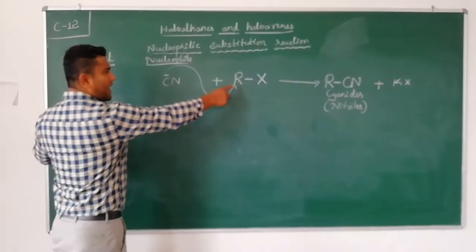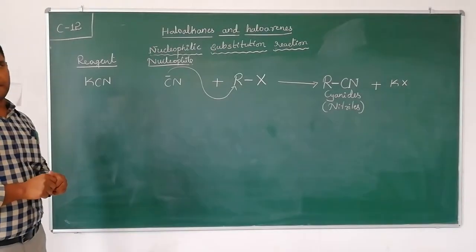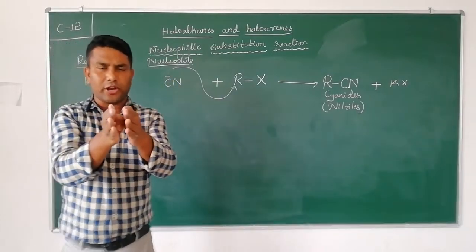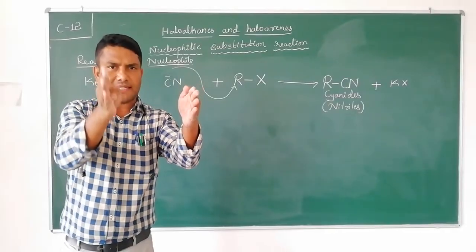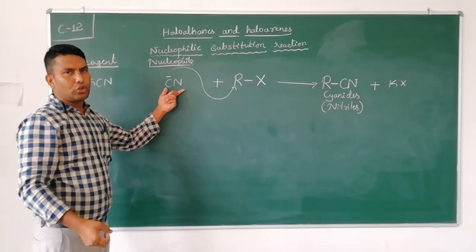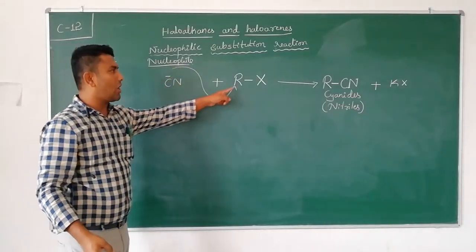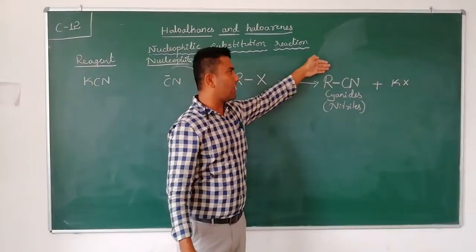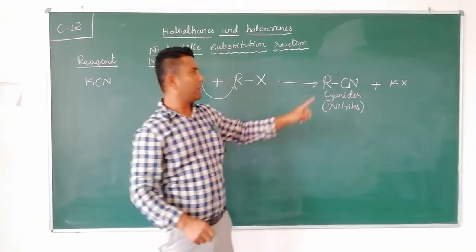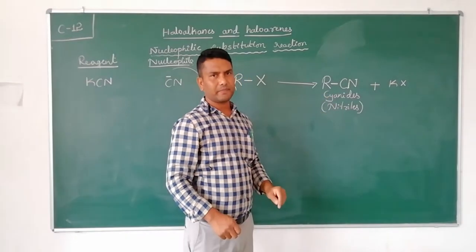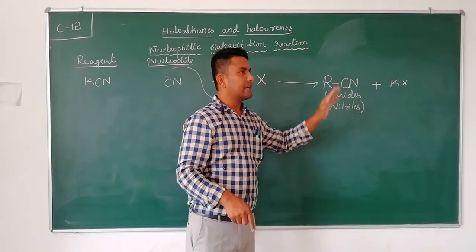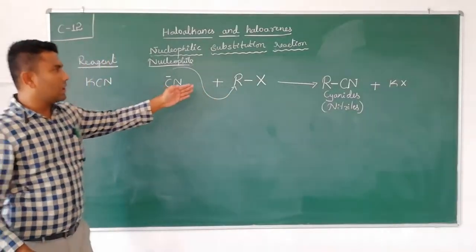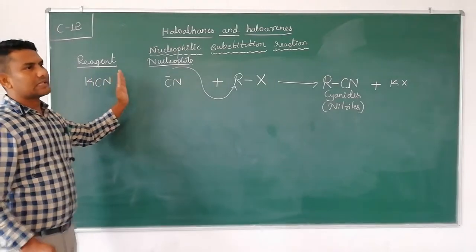When an alkyl halide reacts with potassium cyanide, the cyanide ion is the nucleophile. Potassium cyanide dissociates to give K⁺ and CN⁻. This CN⁻ attacks the R group and we get the R–CN product. Such R–CN type compounds are called cyanides. If R is a methyl group, it is methyl cyanide; if R is an ethyl group, it is ethyl cyanide.